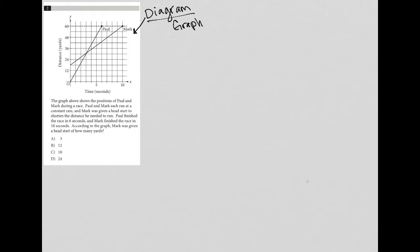So anytime a graph is provided, pay close attention to the points that you're given. For instance, we have this point for Mark, which is at 10, 60. And we have this point for Paul, which looks to be at 6, 60. And we also have this intersection point here,